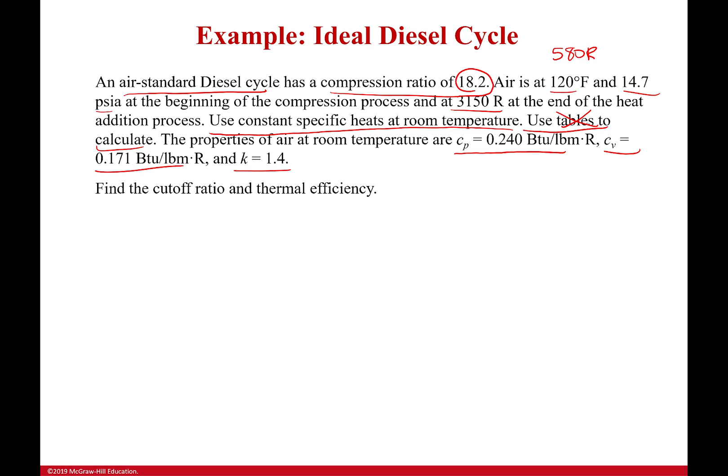Okay, what are we finding? The cutoff ratio and the thermal efficiency. We'll start with the cutoff ratio because that's going to be the easiest one to get. Now, if you're going to do any of these problems, the first thing is always to draw the process. Remember, for an otto cycle, we had a heat addition process that was constant volume. In this case, it's constant pressure because the piston is allowed to expand as the gas combusts and adds the heat.